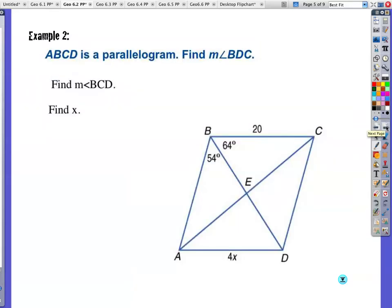Example 2, we have another parallelogram. Very similar to the other picture here. Kind of the same thing is going to happen. Angle of BCD right here. I need to find that angle. Well, I'm going to find out that this is, let's see, 118. If I add up 64 and 54, I'm getting 118 degrees.